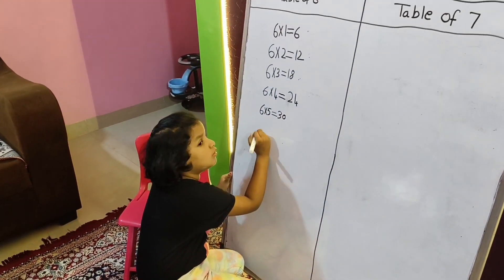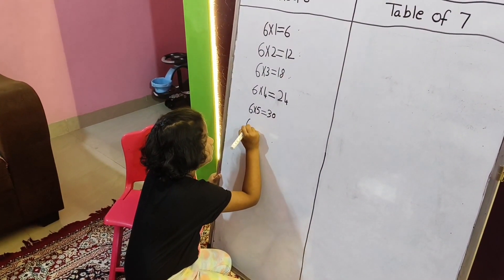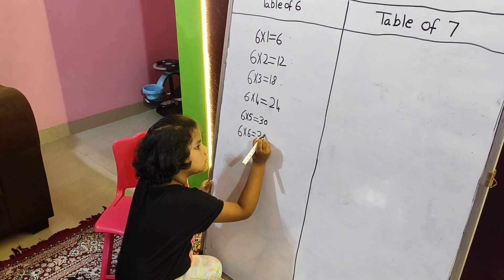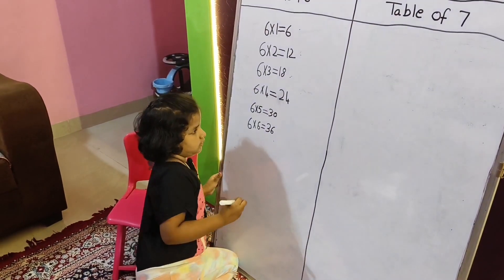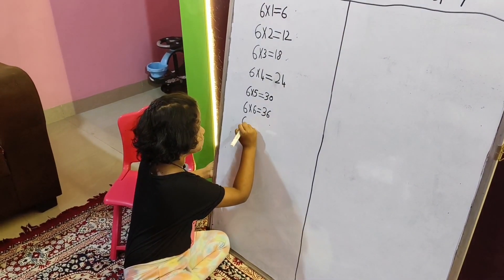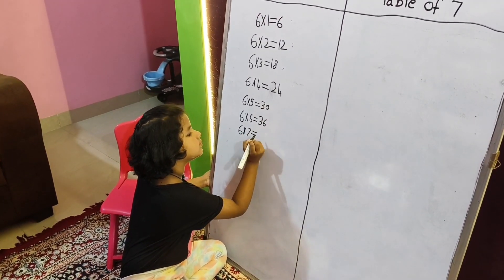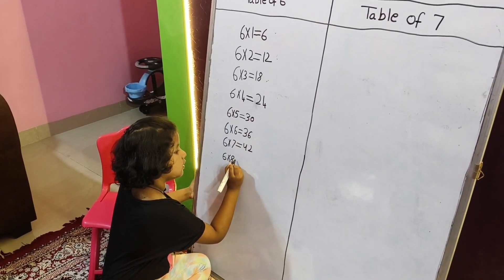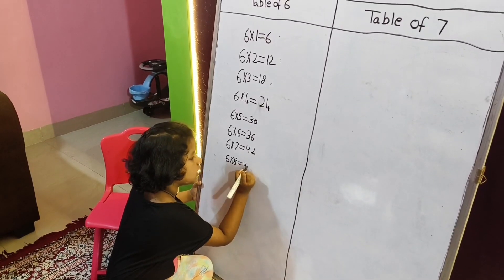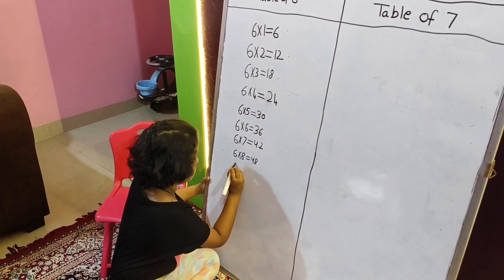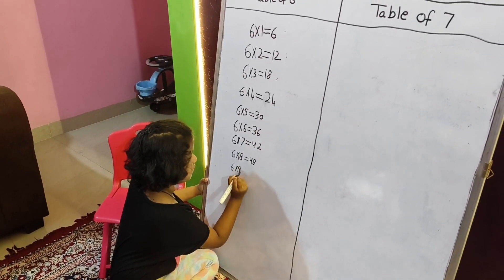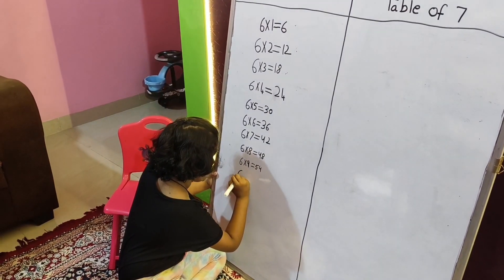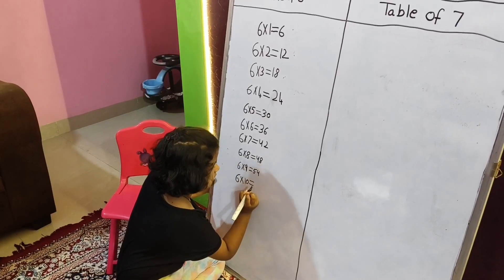Now I have one idea. 6 multiply 6 equal 36. 6 multiply 7 equal 42. 6 multiply 8 equal 48. 6 multiply 9 equal 54, 60. Multiply 10 equal 60.